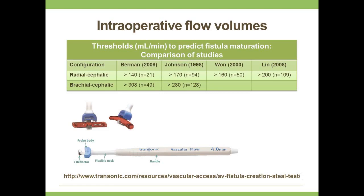Fistulas unlikely to mature and requiring immediate revision or abandonment can be identified intraoperatively. This table compares cutoff values from four different studies using transit time ultrasonography for intraoperative flow volumes. A vascular flow probe used in the OR suite has a reflector plate placed underneath the vessel, measuring a downstream and an upstream signal; the transit time between those values is used to calculate flow volume. This is one way flow volumes can be assessed as early as intraoperatively.